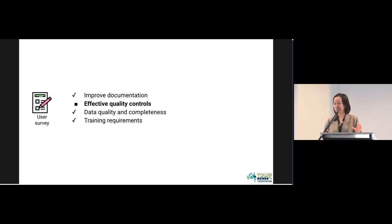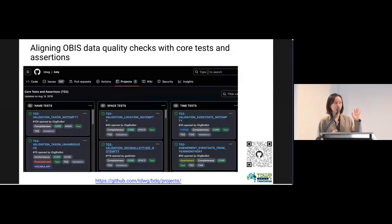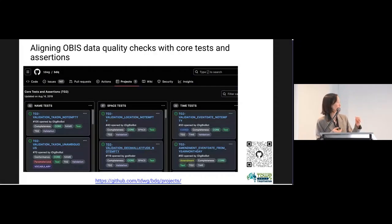A significant chunk of our work relates to the effective quality control feedback from the user survey. We aligned the OBIS data quality checks with the core tests and assertions developed by the TDWG Biodiversity Data Quality Task Group 2. We mapped 34 OBIS quality checks to 24 core tests and assertions out of the 99 total. We also determined how to parameterize the tests to fit marine data — for example, some default parameters in the core tests use the GBIF backbone taxonomy, but in OBIS we use the WoRMS taxonomic backbone.